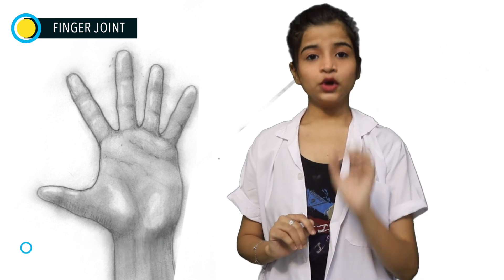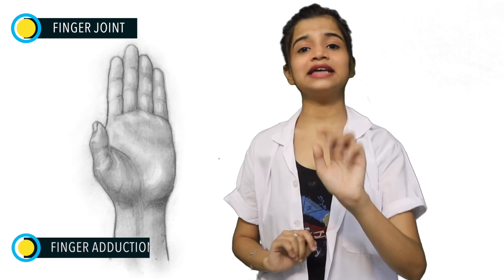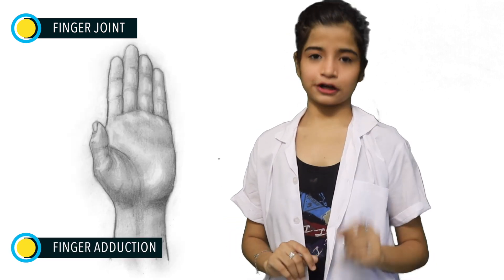Bringing our fingers back to the normal position — extending our fingers back is called extension. When we bring our four fingers back toward the middle finger, that is called adduction.